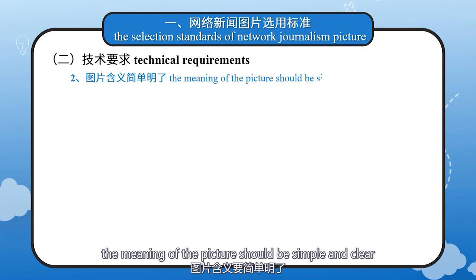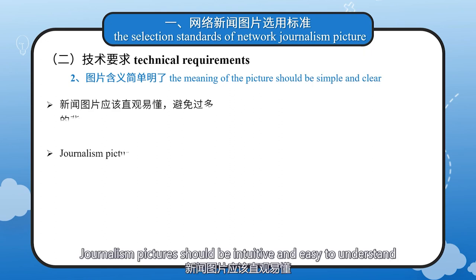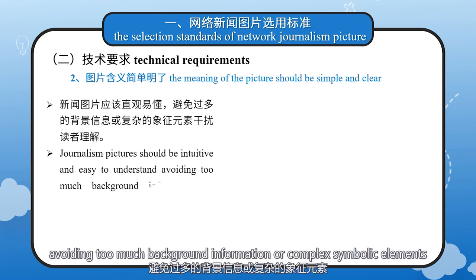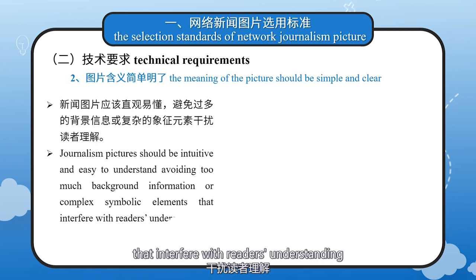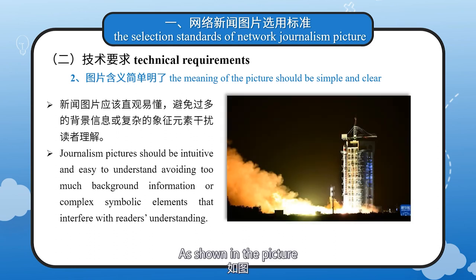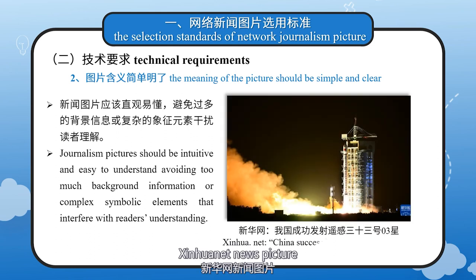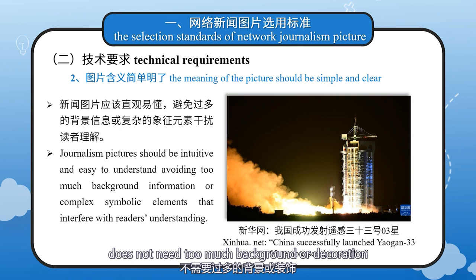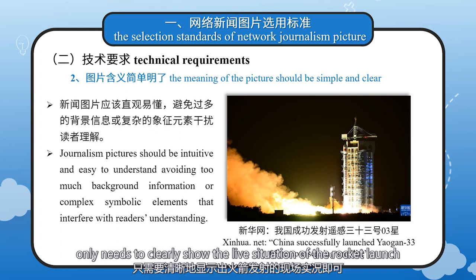Secondly, the meaning of the picture should be simple and clear. Journalism pictures should be intuitive and easy to understand, avoiding too much background information or complex symbolic elements that interfere with readers' understanding. The subject of the picture should be directly related to the news event and topic. As shown in the Xinhua.net news picture of China successfully launching the Yaogan 3303 remote sensing satellite, it does not need too much background or decoration — only needs to clearly show the rocket launch situation.